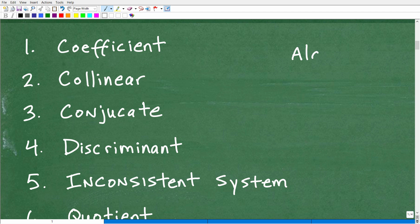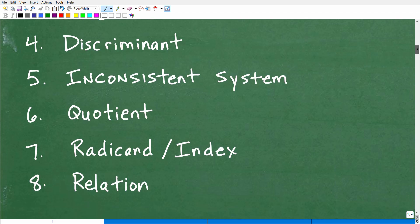So here I've got more words. The first word is coefficient. The second one is collinear. Then we have conjugate. The next one is discriminant. The next one is inconsistent system. Then we have quotient. And then we have radicand index. And then the last one is relation. These are just some random words. But I was kind of going through math glossary. These are very important terms. But a lot of students don't remember the actual technical word to these. But it's important that you do.